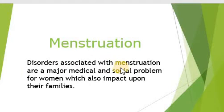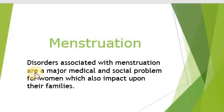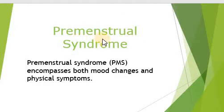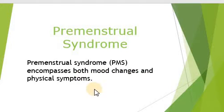Menstruation has several associated disorders that mainly have a social impact on women and a very great effect on their lives. Premenstrual syndrome is a disorder in which symptoms encompass both mood changes and physical symptoms. These symptoms may start even 14 days before menstruation or may occur just a few days before, and they will disappear after the onset or shortly after menstruation.